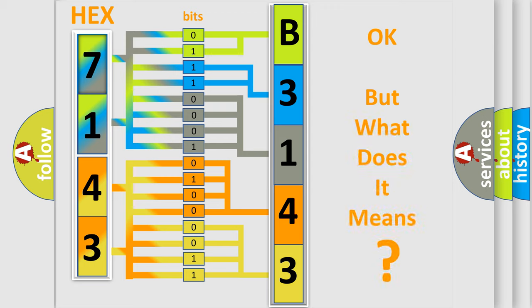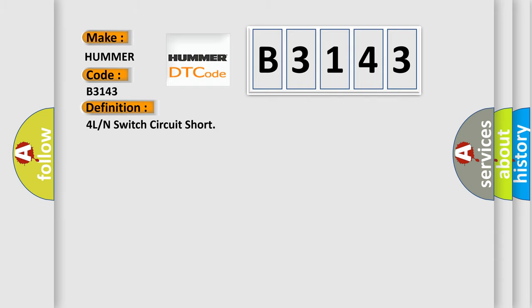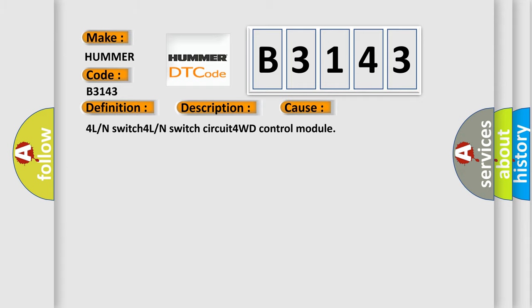The number itself does not make sense if we cannot assign information about what it actually expresses. So, what does the diagnostic trouble code B3143 interpret specifically for car manufacturers? The basic definition is: 4L or N-switch circuit short. This DTC code indicates that though the transfer shift actuator motor position switch is in the 4L lock position, the off signal is not input from the 4L N-switch. This diagnostic error occurs most often due to faults in the 4L or N-switch, the 4L or N-switch circuit, or the 4WD control module.